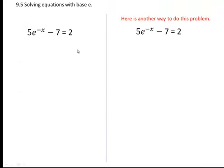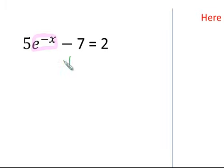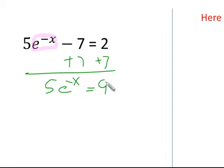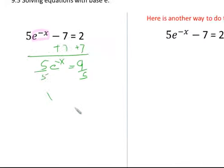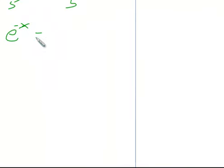Let's look at how to solve an equation with the natural number e. There are two ways to solve it. The first way, as the book does it: isolate the natural number e first using algebra — add 7 to both sides, then divide by 5. Since we can't get the bases to be the same directly, instead of taking the common log (base 10), we take the natural log of both sides.